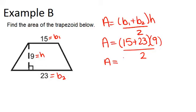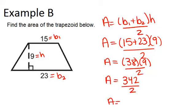So that means the area is 38, times 9, divided by 2. So that gives us 342, divided by 2, which is 171 units squared.